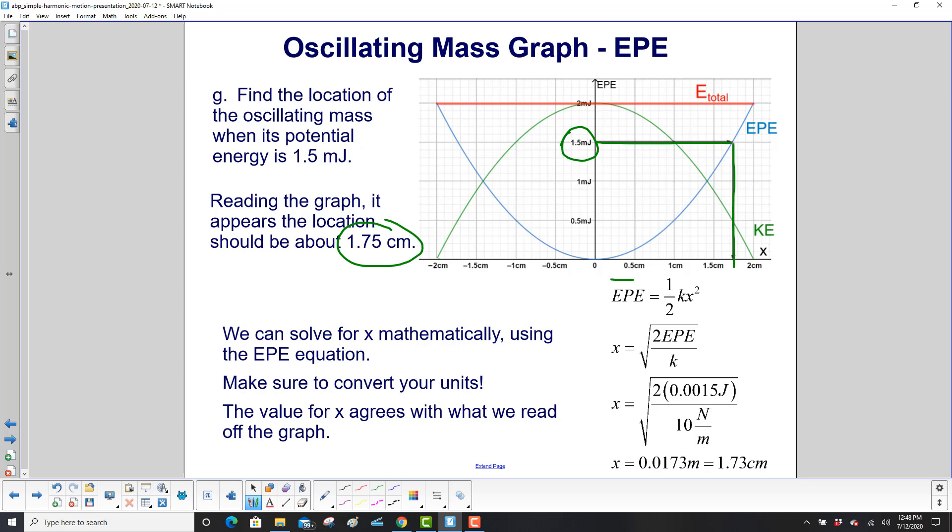But we can do it mathematically, because we have the value for k. Here's the EPE. Solve that equation for x. And you do that by multiplying both sides by 2 over k. And that will give you x squared. And then you have to take the square root. We did a bunch of algebra steps in one here.